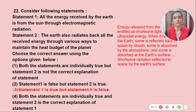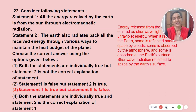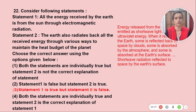The energy released from the sun is emitted as short wave light — this is ultraviolet rays. Almost all of this reaches the surface of the earth. This statement 2 is wrong.